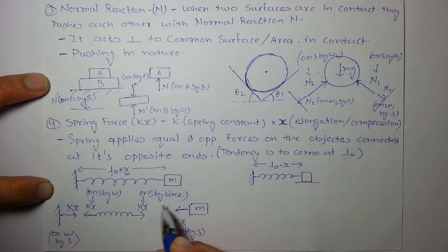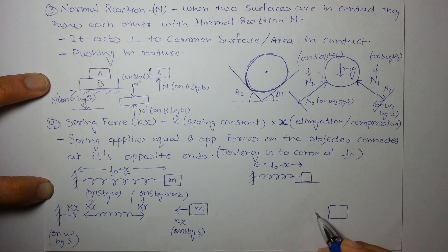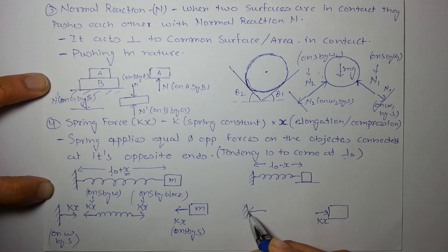Similarly, when the spring is compressed, it tries to elongate back and pushes the objects KX. And the force on the wall will also be KX. These are the forces we generally use: tension, normal reaction, weight, and spring force.